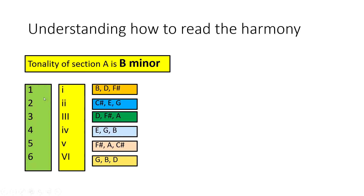For chord II we just go up a step from B — the next note is C sharp — and again applying the same rule we build the chord up in steps. After C sharp comes D, then E, so E would be chord IV; after E is F sharp which is chord V; and after F sharp is G, which is chord VI.